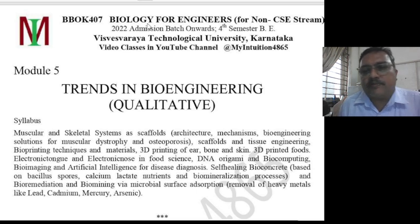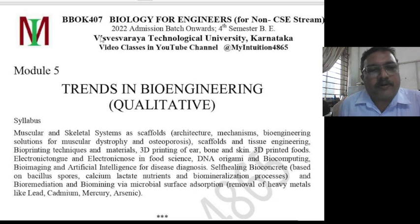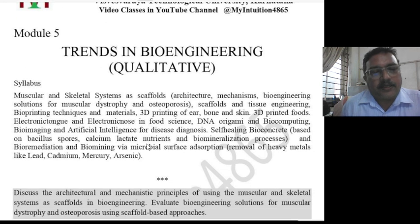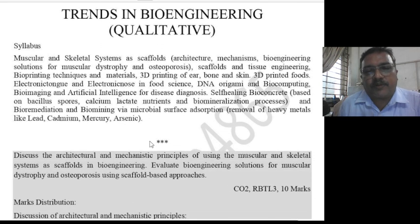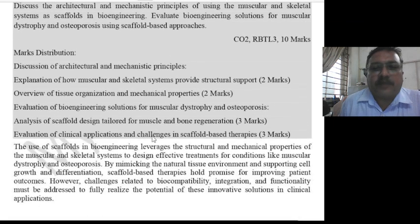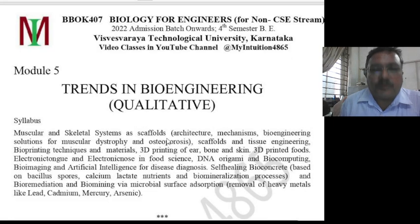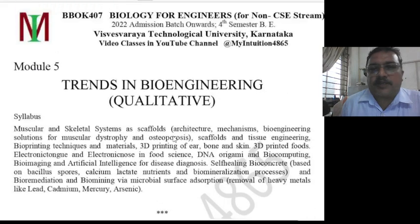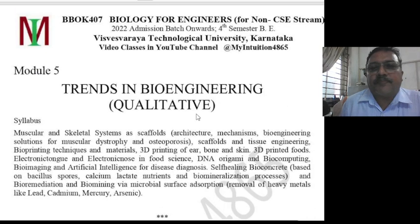For all five modules together, if you want for a particular stream, you can get it for 200 rupees. The same applies for Biology for Engineers — BBOC407 as well as BBOK407. That much content is involved and it is explained for each specialized stream specifically. This material will be useful for students in the future and may have some impact on future research as well as job opportunities. Thank you.